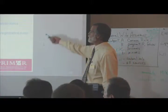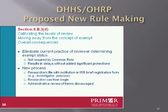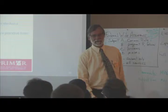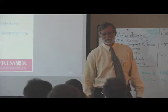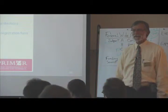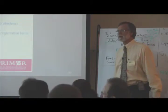The new process is that researchers simply file with the institution or the IRB a registration form — name of the investigator, purpose — and the researcher can then begin. Administrative review of the forms is discouraged. The idea is to get out of the researcher's way.